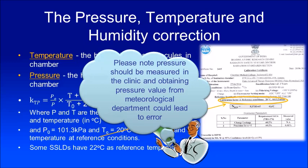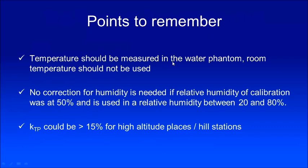Points to remember: temperature should be measured in the water phantom — room temperature should not be used. No correction for humidity is needed if the relative humidity at calibration was 50% and your room is between 20 and 80%. The temperature-pressure correction could be as high as 15% for high altitudes and hill stations.